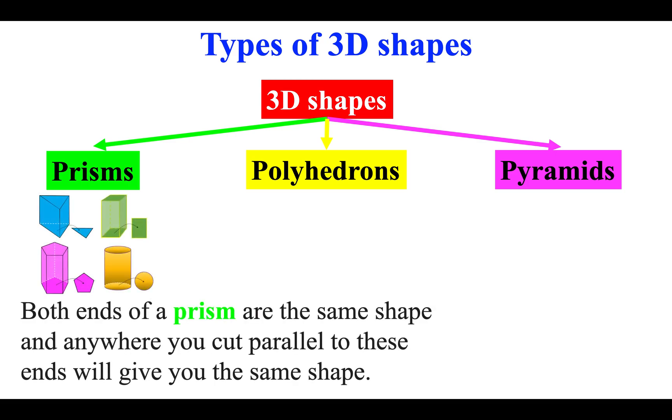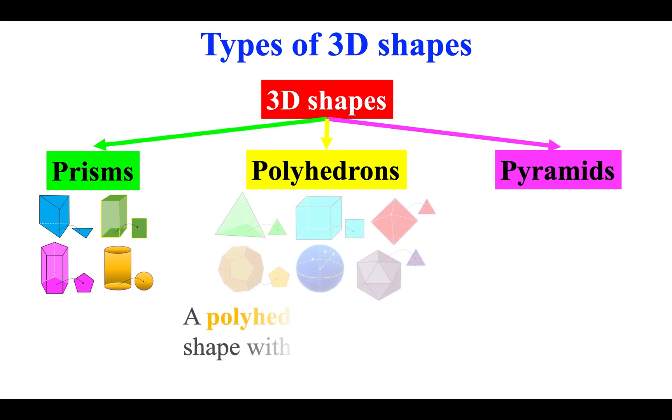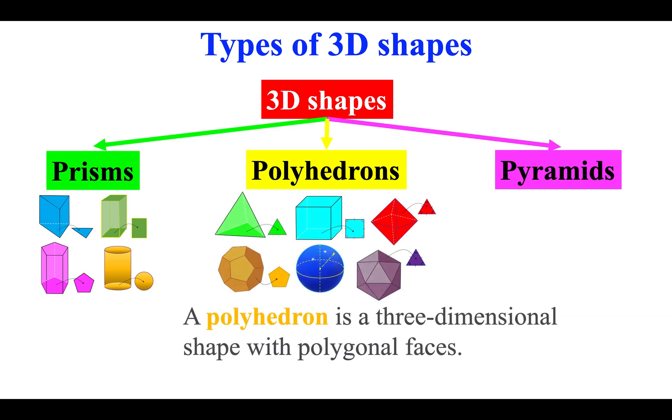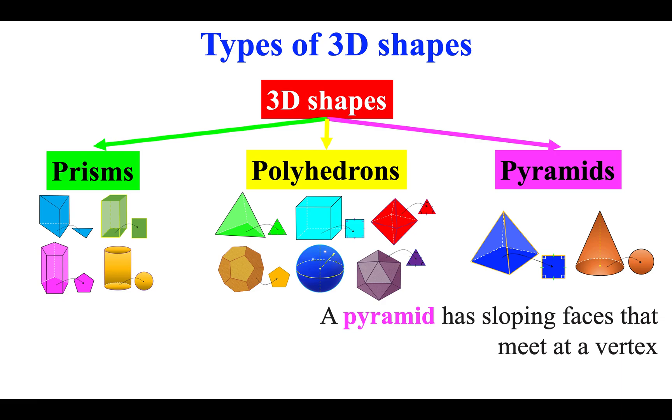Both ends of a prism are the same shape and anywhere you cut parallel to these ends will give you the same shape. A polyhedron is a three-dimensional shape with polygonal faces. A pyramid has sloping faces that meet at a vertex.